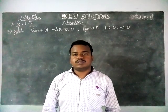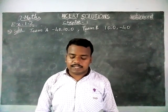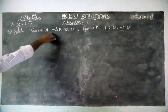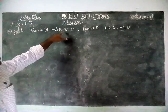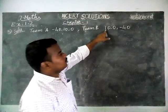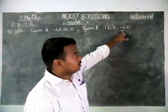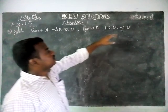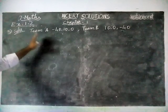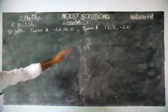They have participated in a quiz competition with 3 rounds. Team A scored minus 40, 10, and 0 in the three rounds. Team B scored 10 in the 1st round, 0 in the 2nd round, and minus 40 marks in the 3rd round. They ask us to find the total marks scored by each team and which team scored more marks.